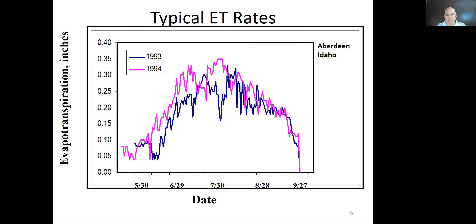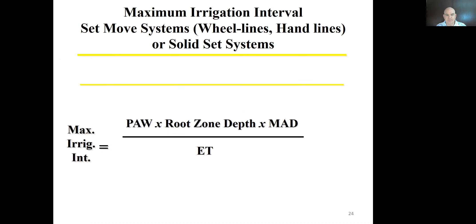Here are typical ET rates from Aberdeen, Idaho. In April they're under 0.1 inches per day. As the season warms, they climb to about one-third of an inch at peak — that's fairly typical for the hottest part of summer. Somewhere between one-quarter and one-third of an inch per day of ET is accurate even in the hottest places in the western United States. In the hottest areas of Arizona, measured values were around 0.38 inches.